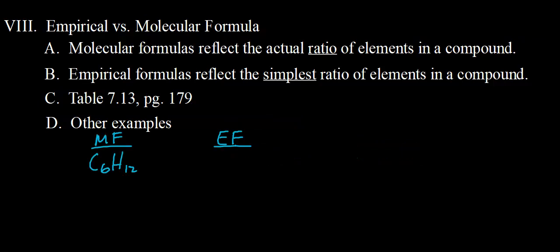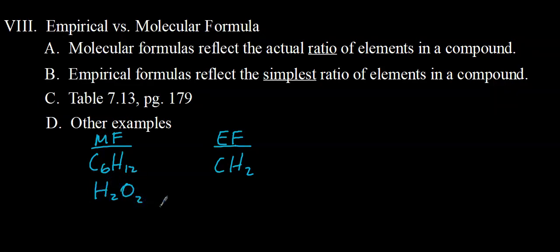The molecular formula for this compound is C₆H₁₂. What would be its empirical formula? The actual ratio of carbon to hydrogen atoms is 6 to 12. If we take these subscripts and reduce them to the lowest whole number ratio, we get the empirical formula — which in this case is CH₂. For hydrogen peroxide, the molecular formula is H₂O₂ — a 2-to-2 ratio of hydrogen to oxygen. We reduce that to a 1-to-1 ratio, so the empirical formula is HO.